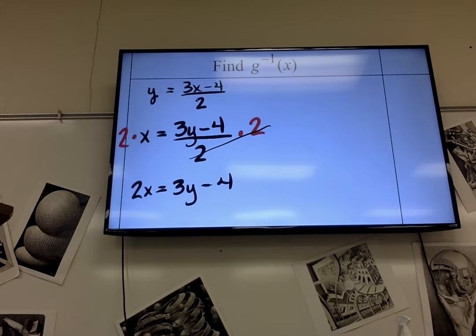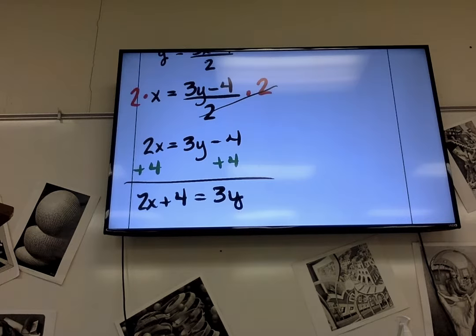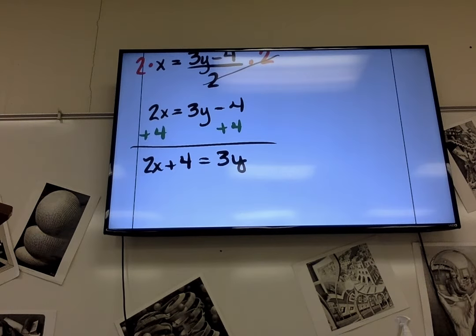Donna, now what? Yep. Add 4 to both sides. So we get 2x plus 4 equals 3y, and then, Justin, divide by 3.